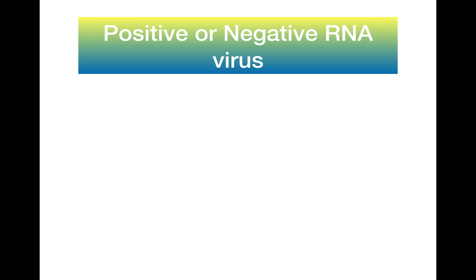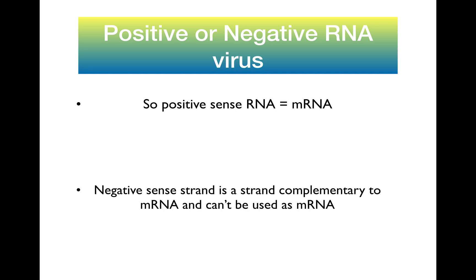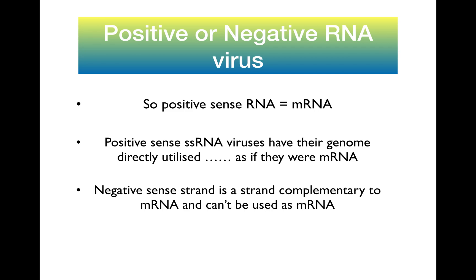What is the difference between a positive or negative RNA virus? For all intents and purposes, just remember that positive-sense RNA is equivalent to mRNA — and what do we need mRNA for? For the ribosome to read it and for the process of translation. Negative-sense strand is a strand that is complementary to mRNA and therefore cannot be used as mRNA directly, meaning negative-sense strands have a longer way to go before they can be translated. Positive-sense single-stranded RNA viruses have their genome directly utilized as if it were mRNA.